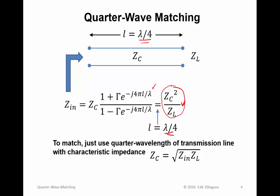Solving for the characteristic impedance, you get that the required characteristic impedance for matching is the square root of Z sub N, that's what you want to match to, times Z sub L, that's the terminating impedance.